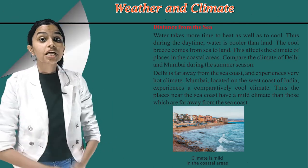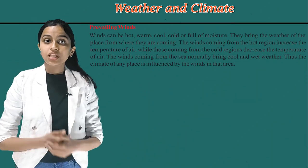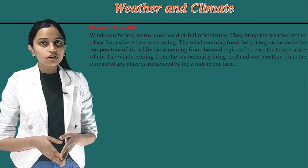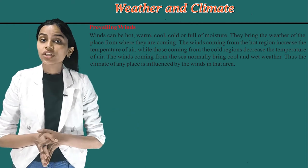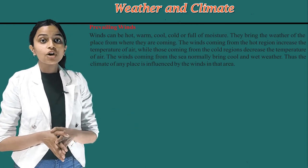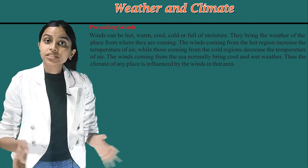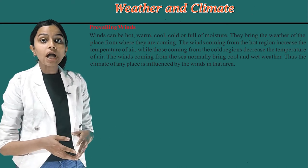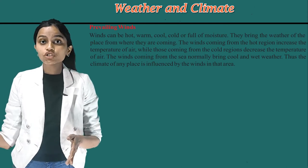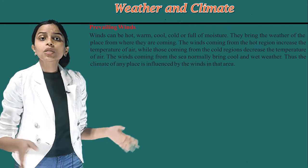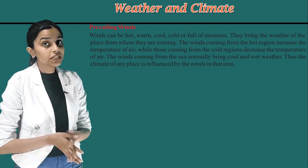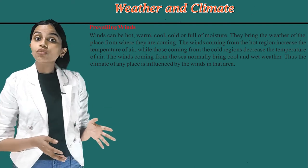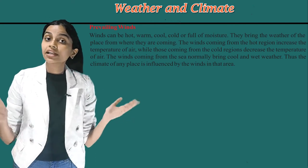The fourth factor is prevailing winds. Winds can be hot, warm, cool, cold, or full of moisture. They bring the weather of the place from where they are coming. The winds coming from the hot region increase the temperature of air. The winds coming from the sea normally bring cool and wet weather. Thus, the climate of any place is influenced by the winds in that area.